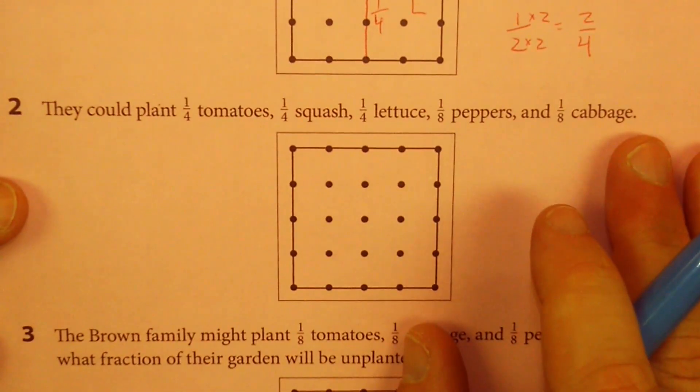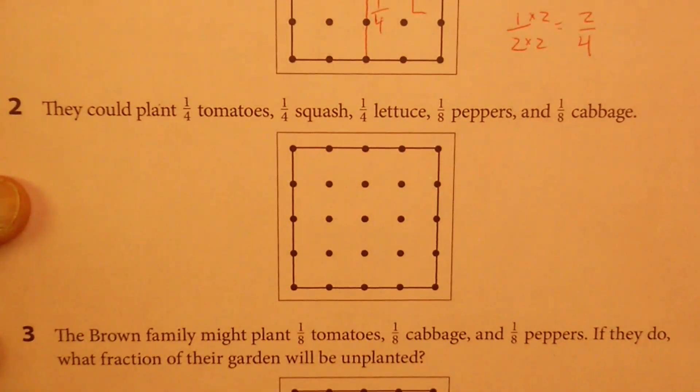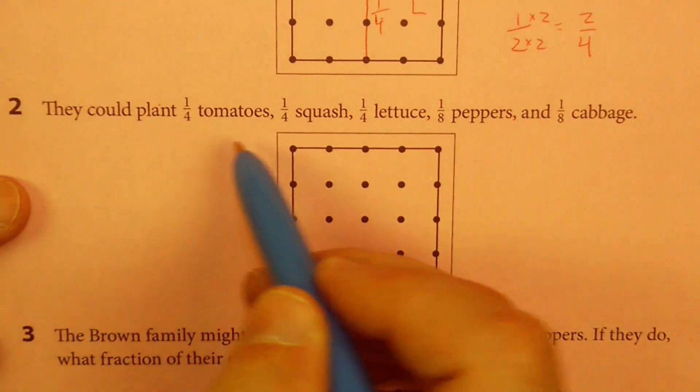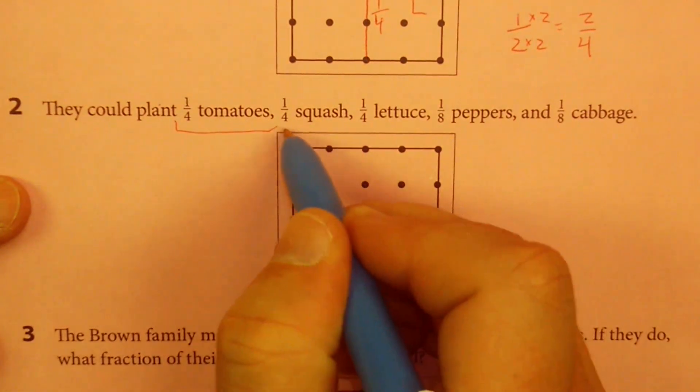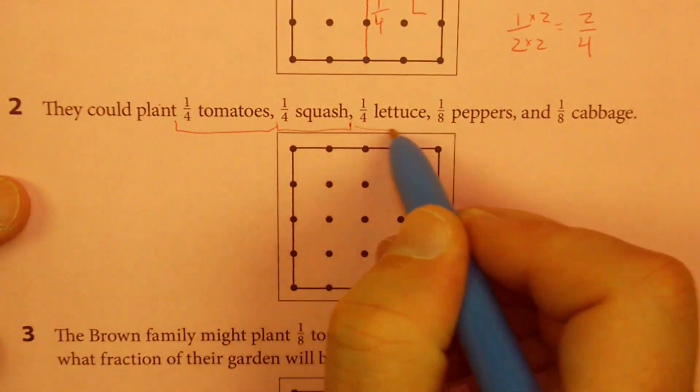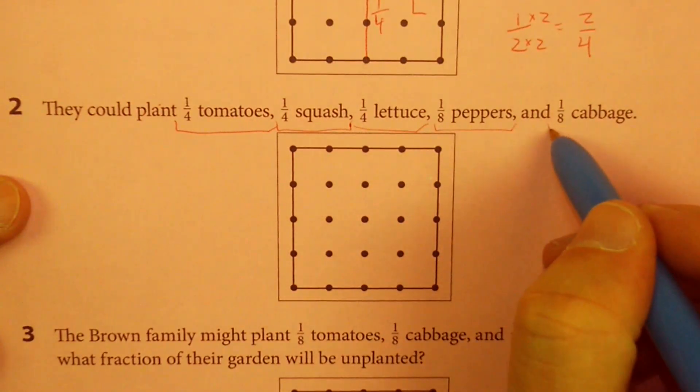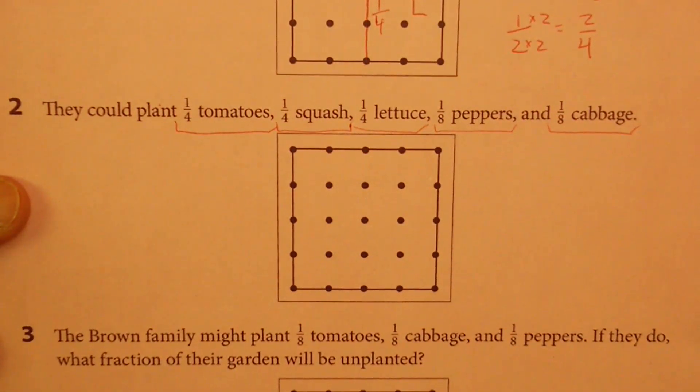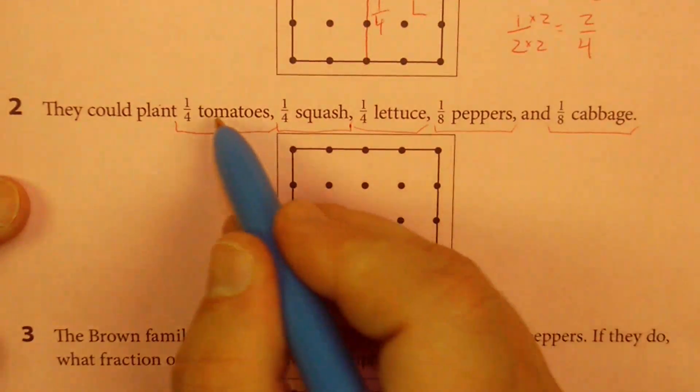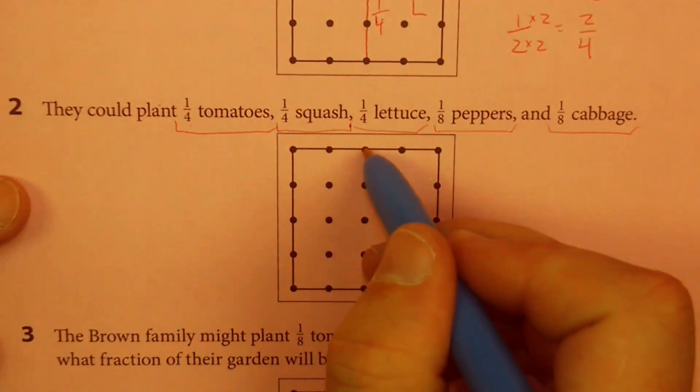So, fraction equivalents. I'm doing a little bit of those in this unit. They want to do a quarter tomatoes, quarter squash, quarter lettuce, one-eighth peppers, one-eighth cabbage. So we have a fourth, a fourth, a fourth. Well, let's break it into fourths.